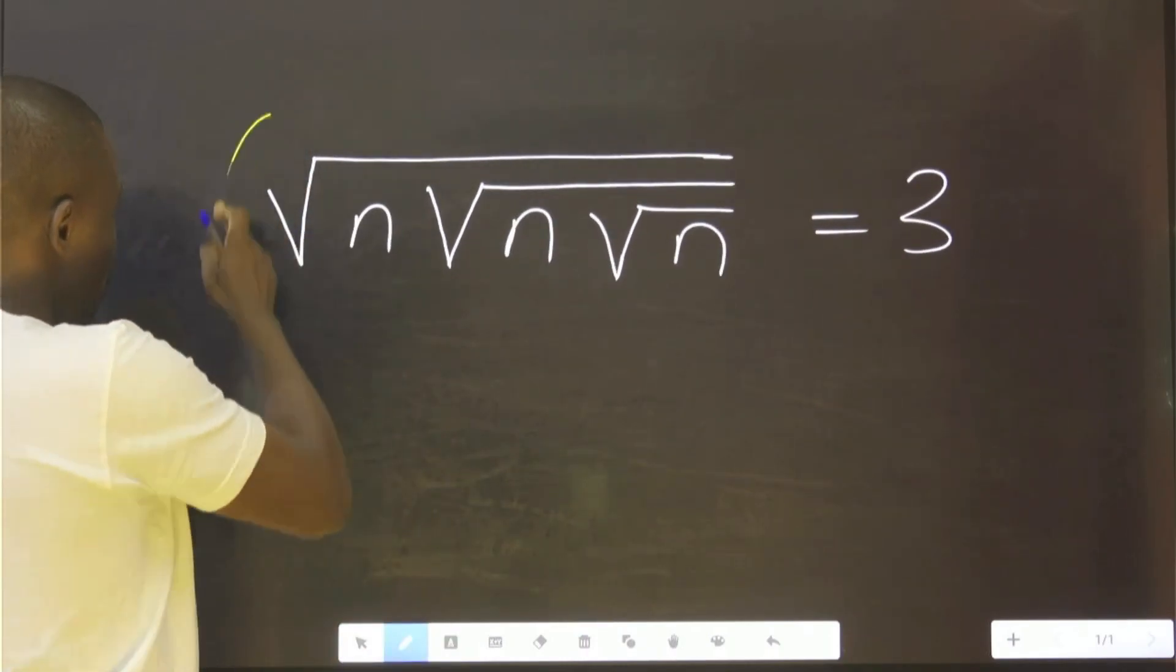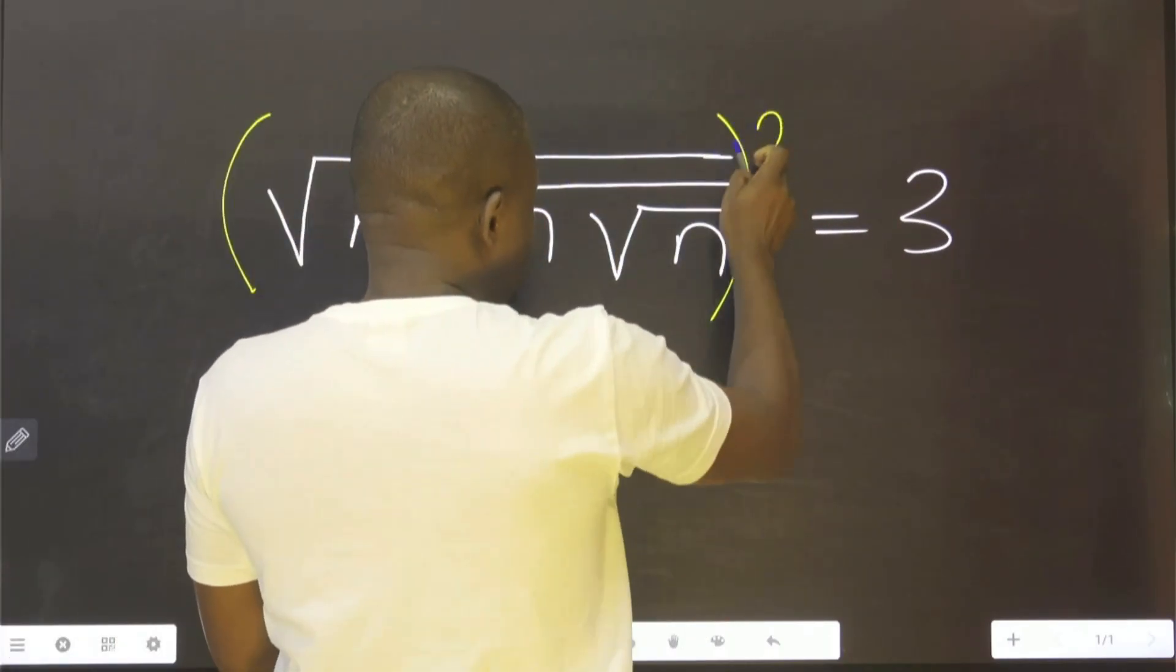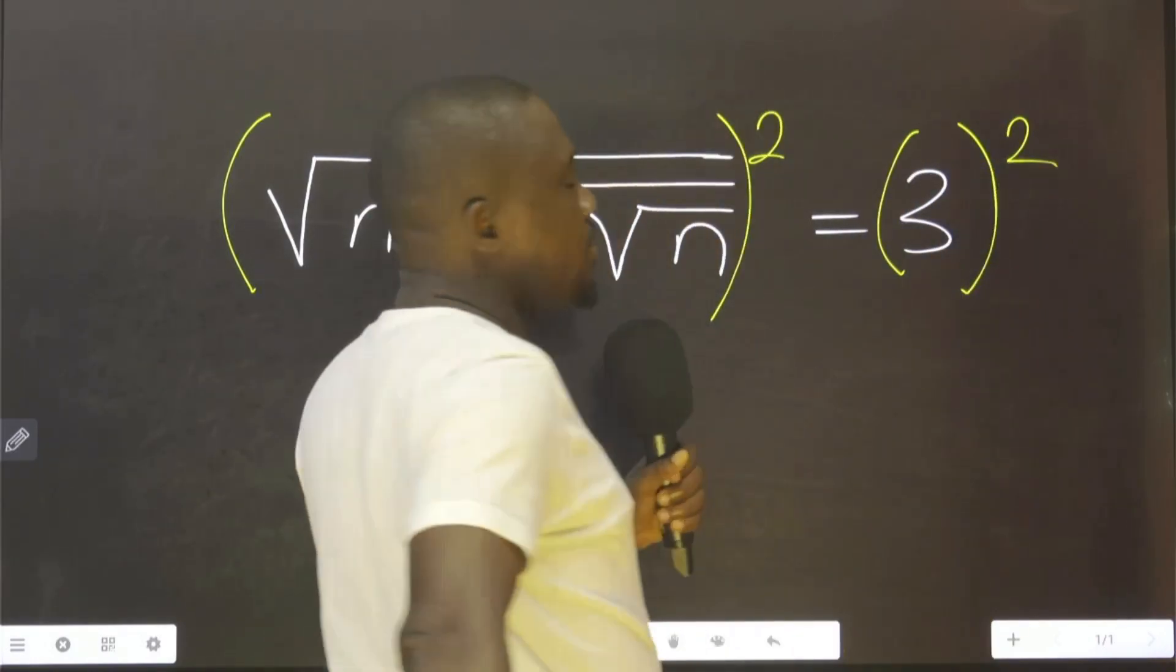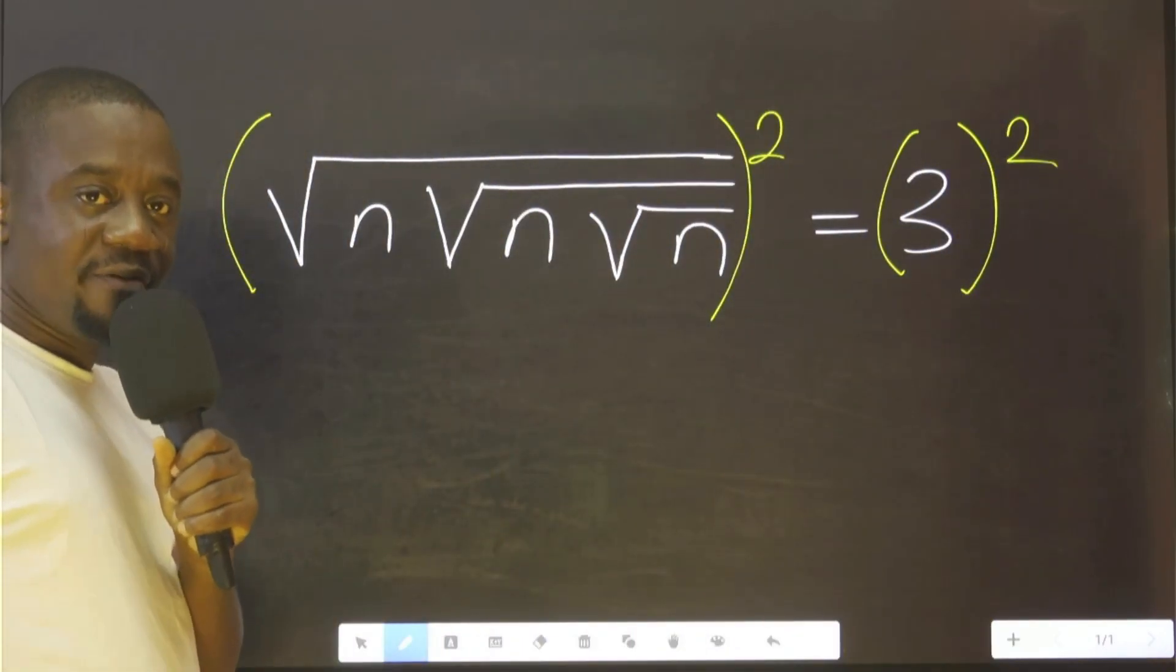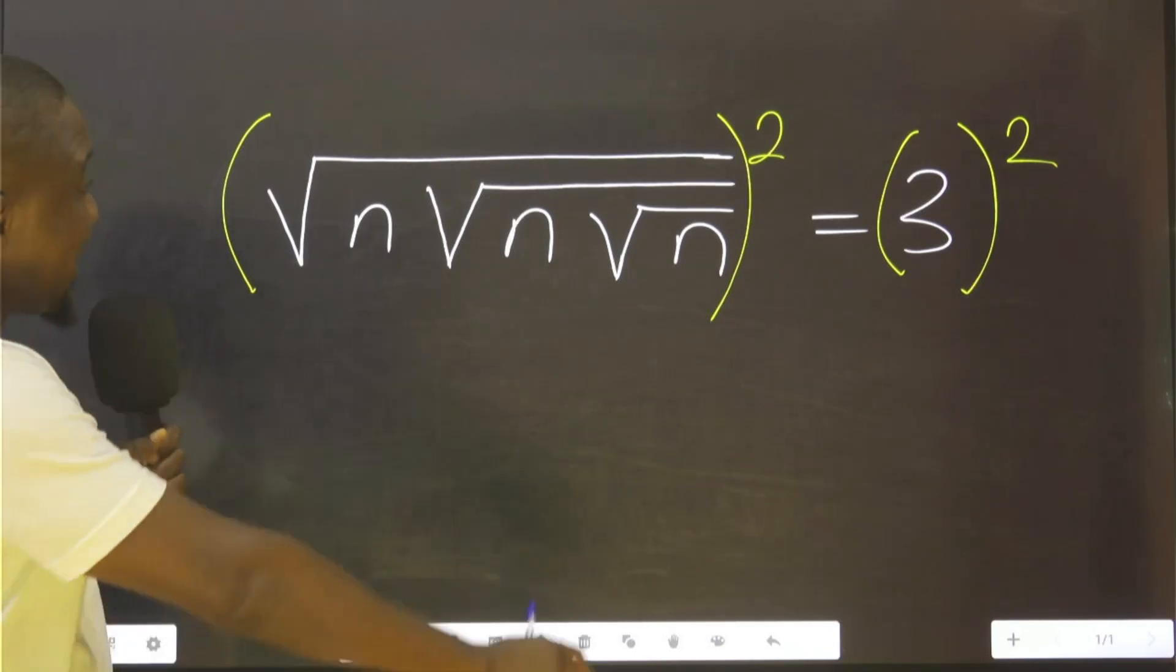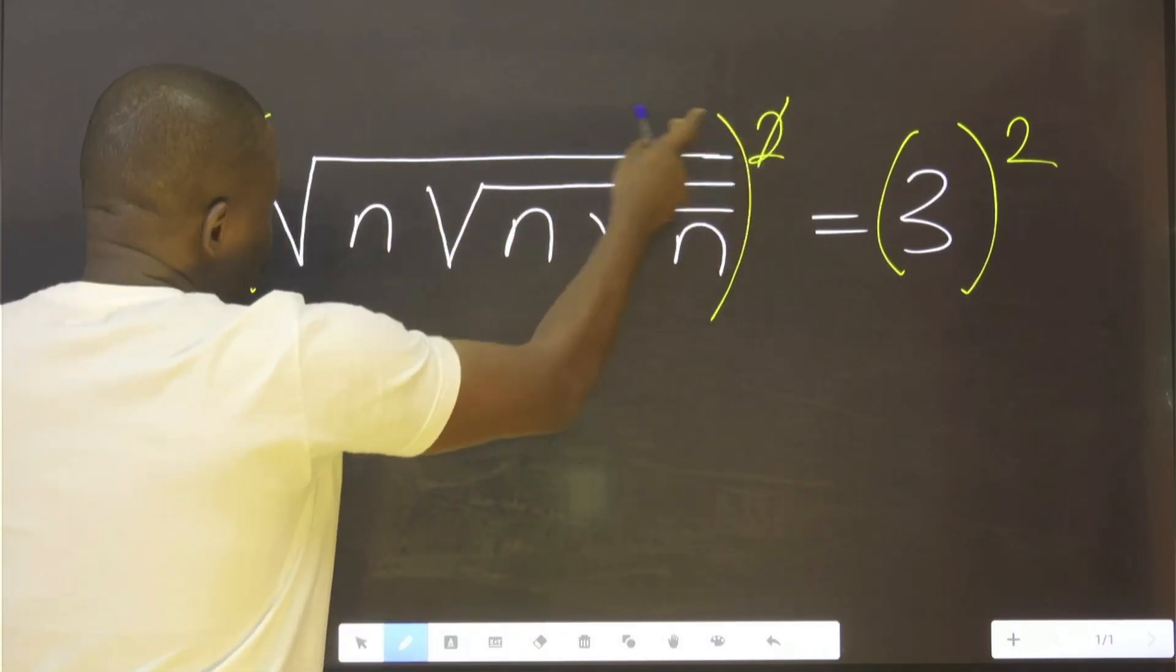First, you square both sides. What is the meaning of this now? It means that this guy will strike this out.